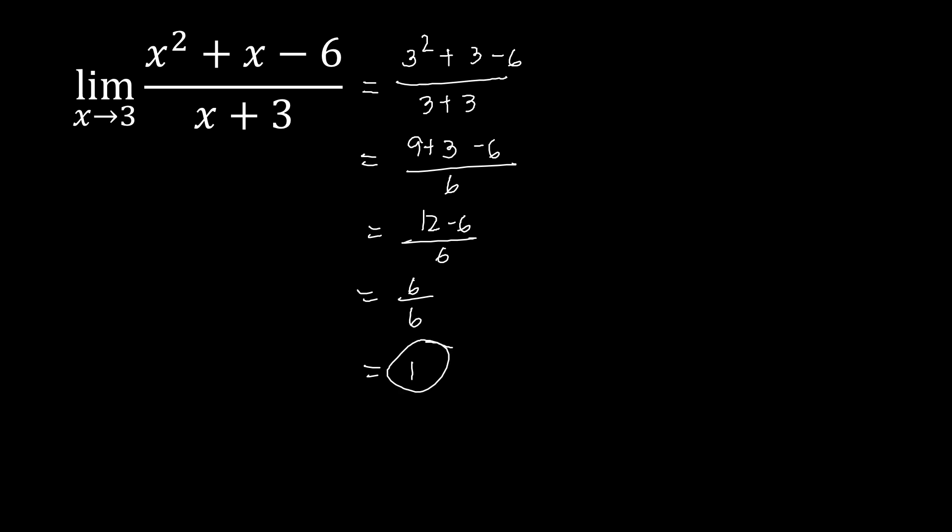This last example reminds us that not every rational function gives 0 over 0. That is why you should first check by direct substitution whether you get 0 over 0 before factoring, because factoring adds unnecessary steps if substitution already works. If substitution does not give 0 over 0, you have your answer directly.